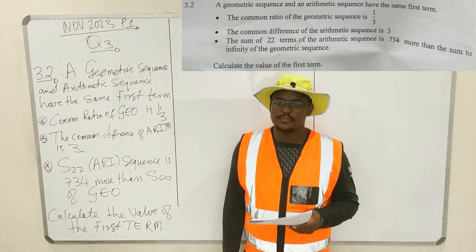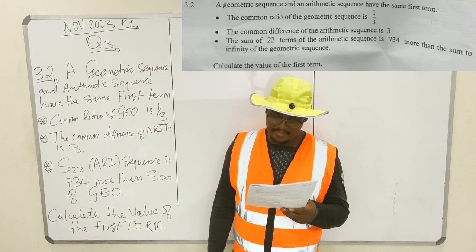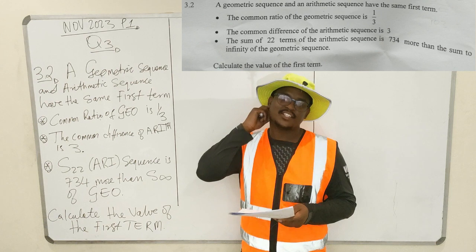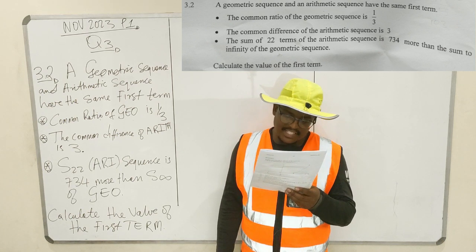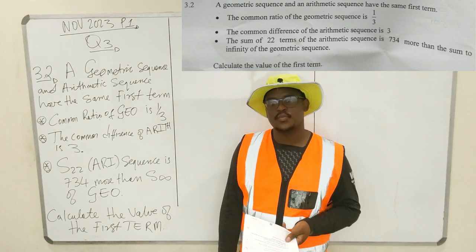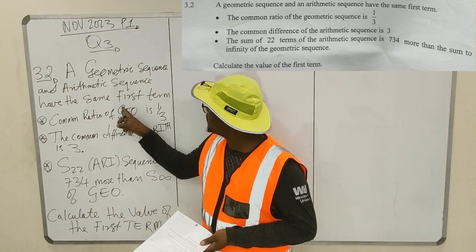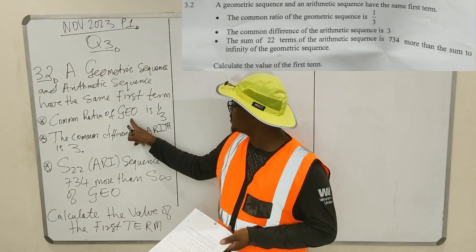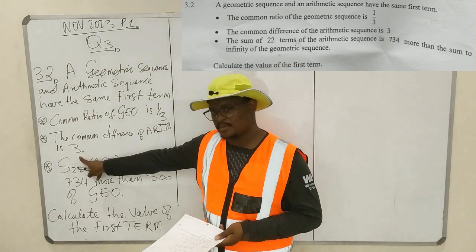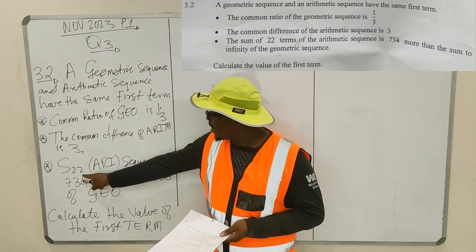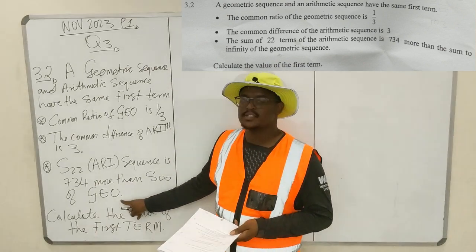Now we're doing 3.2. A geometric sequence and an arithmetic sequence have the same first term. The common ratio of the geometric sequence is 1 over 3. The common difference of the arithmetic sequence is 3. We are told that the sum of the first 22 terms of the arithmetic sequence is 734 more than the sum to infinity of the geometric sequence.